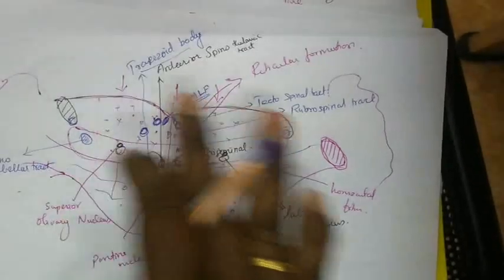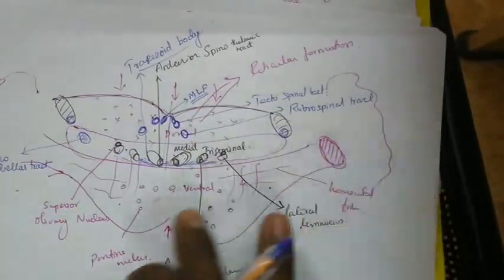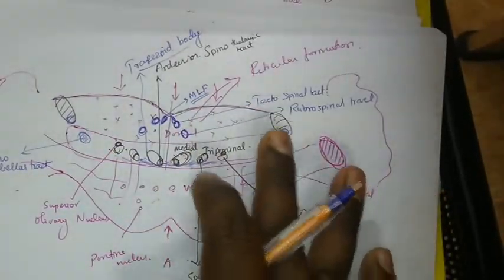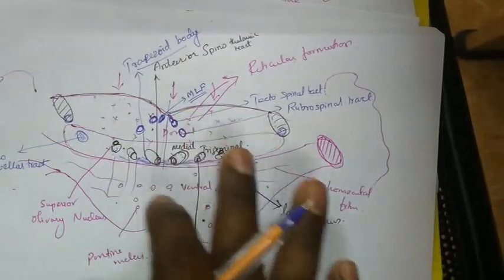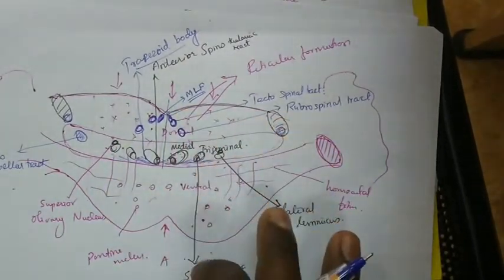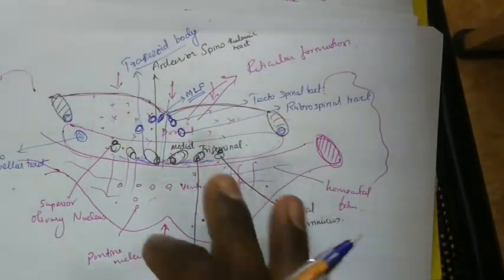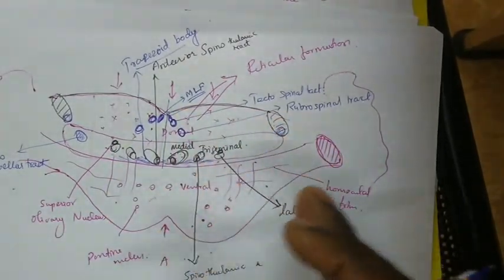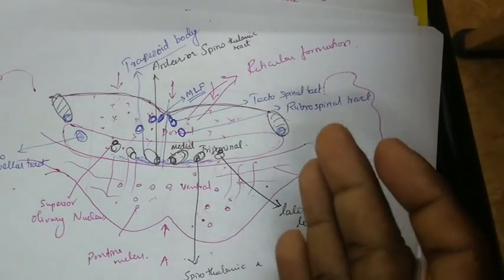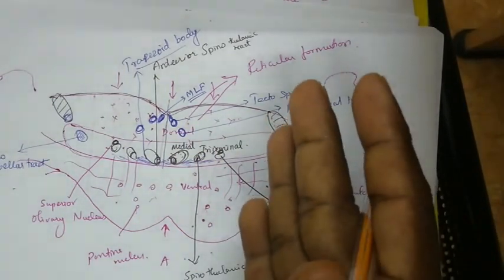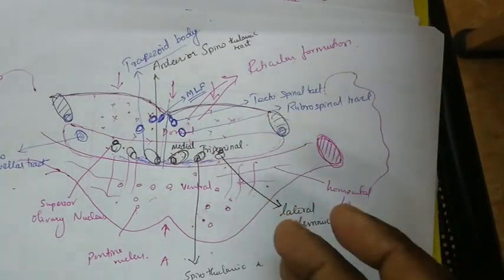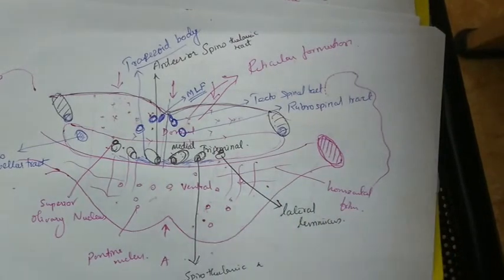So whatever tracts and fibers we have drawn so far are common for both the upper and the lower part of the pons. Now we should study the differences between the section of the upper part of the ponds and the lower part of the ponds. We will discuss the differences in the next video.